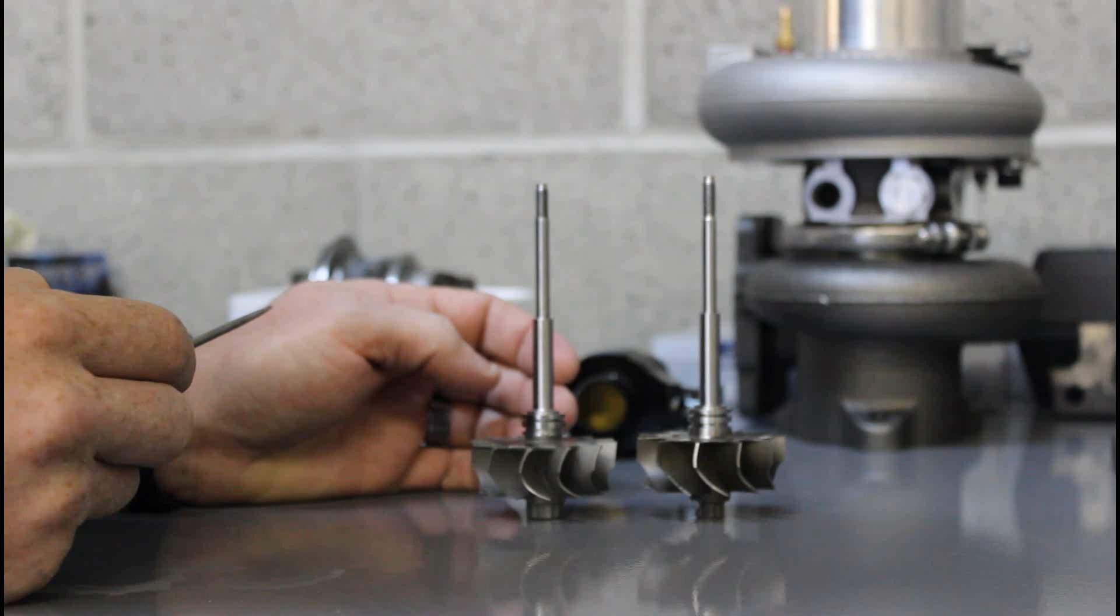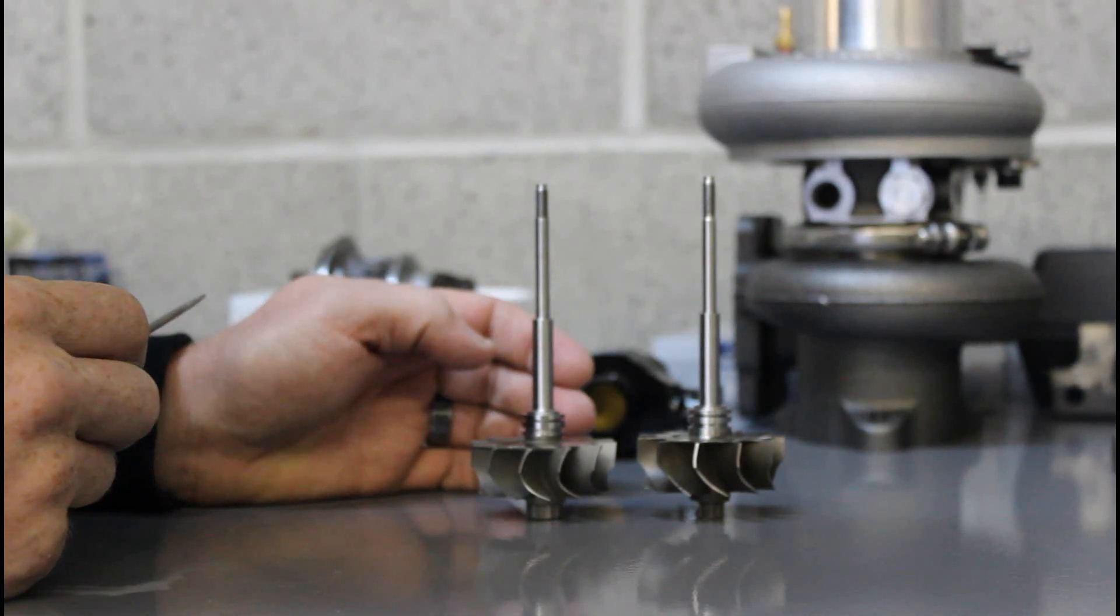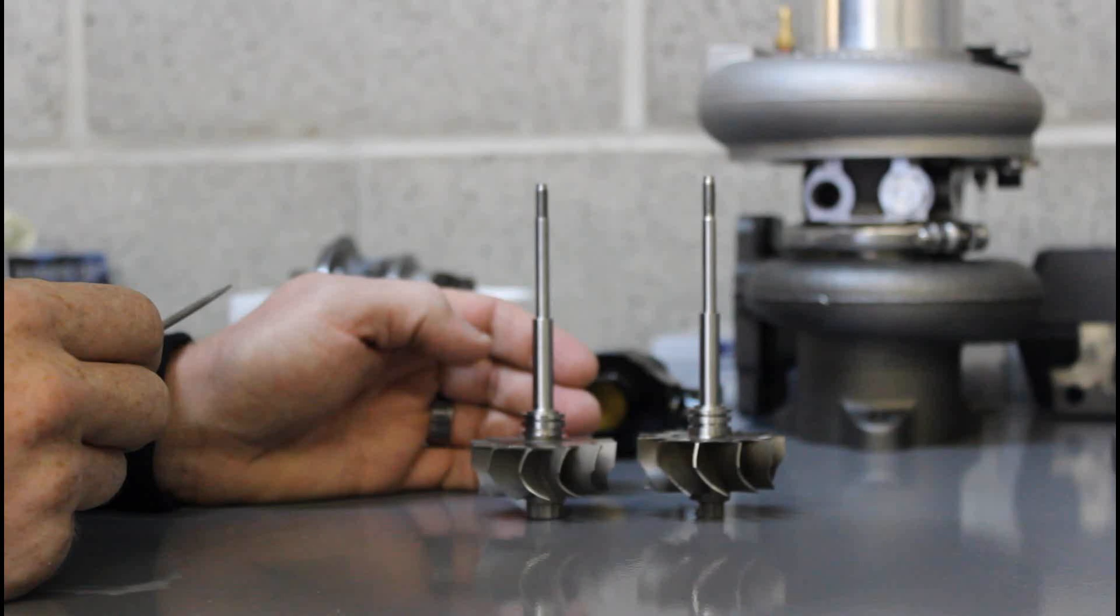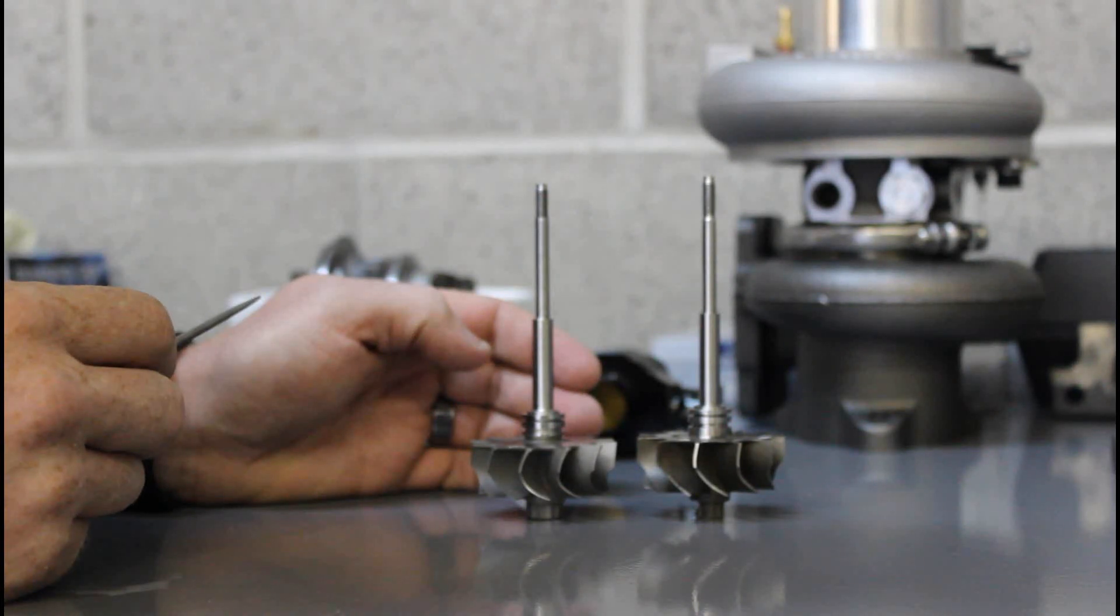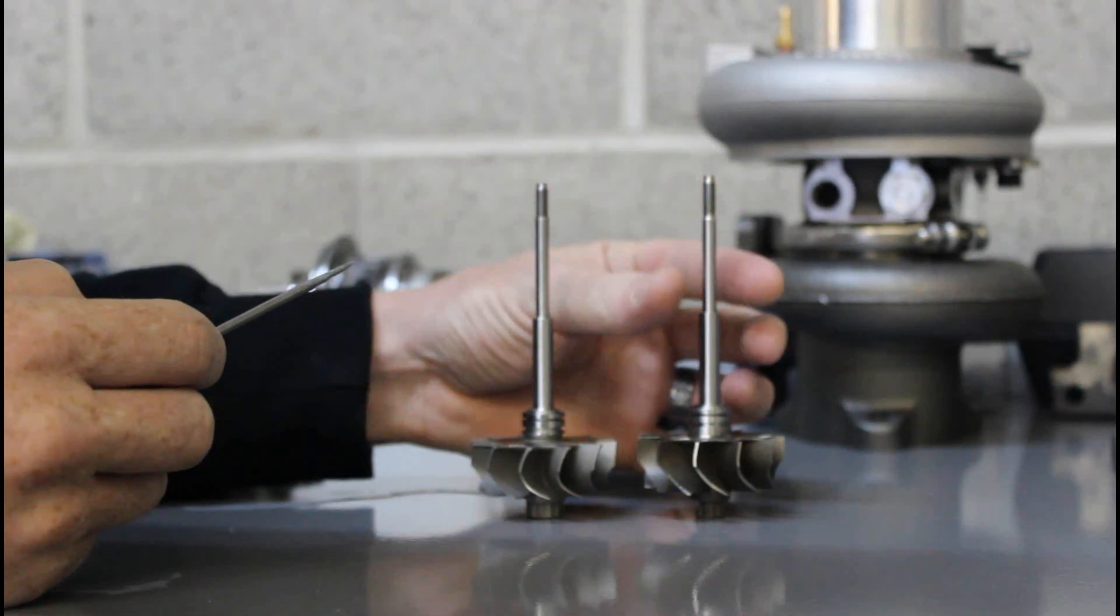This is really what allows us to take a TD-04 turbo that would normally fade at the upper RPM ranges and maybe only be good to around 350 brake horsepower, and we can take it up with a matching compressor wheel up to around 400 horsepower.